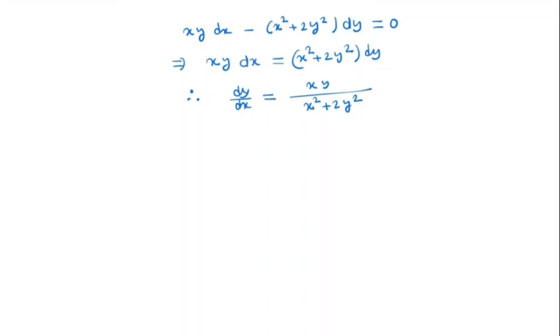Now note that this is a homogeneous differential equation. How we know? Because notice that the degree of xy is 2, and in the denominator, degree of x square and y square both are 2. So the degree of the sum x square plus 2y square, both degree is 2. So this is a homogeneous function of degree zero.